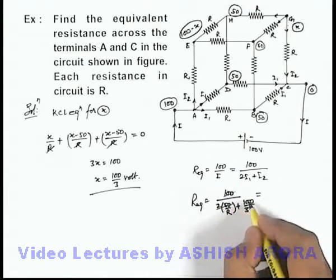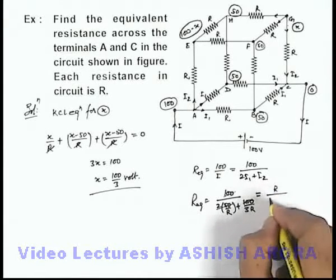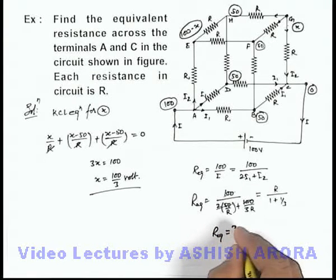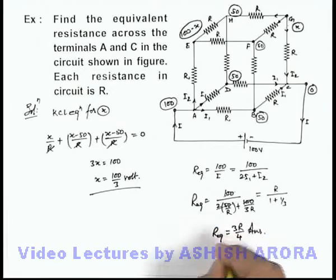So on simplifying here we can see this 100 and 100 and 100 gets cancelled out, it'll be R divided by 1 plus 1 by 3, that is 4 by 3. That means R equivalent we can write as 3R by 4. That'll be the answer to this problem.